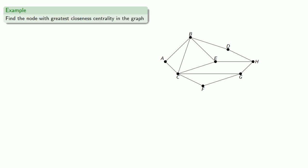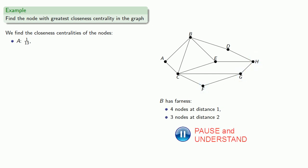And we can find the closeness centrality of all of the nodes and find the node that has the greatest closeness centrality. So we already found that node A has closeness centrality 1/13. Let's take a look at B. So if we look at B, we see that we have four nodes, A, C, E and D, at distance 1. And the remaining three nodes, F, G and H, are at distance 2. So we have 4 at 1, 3 at 2. And if we add them all together, we get a total farness of 10 and a closeness of 1/10.